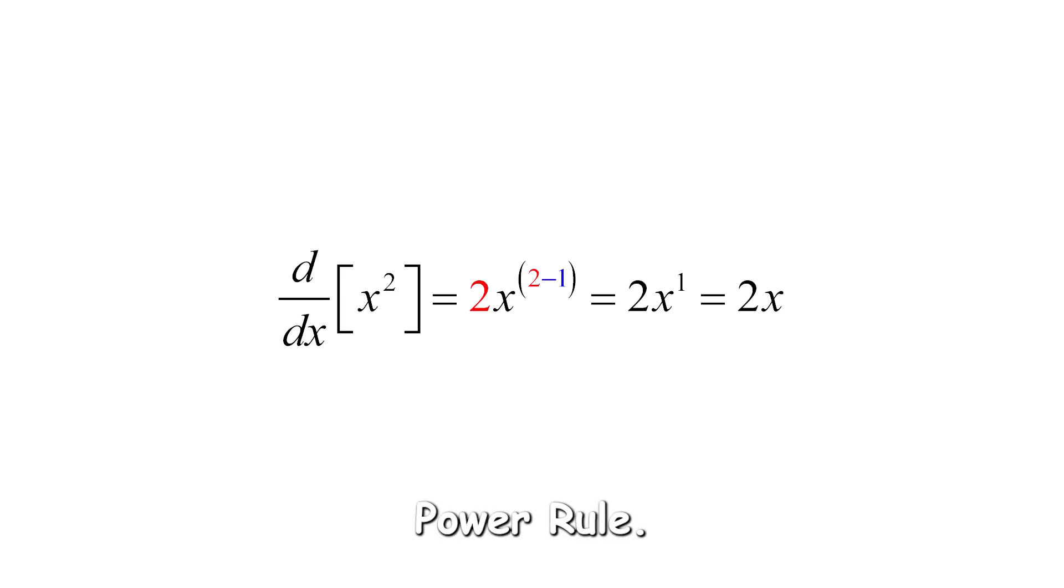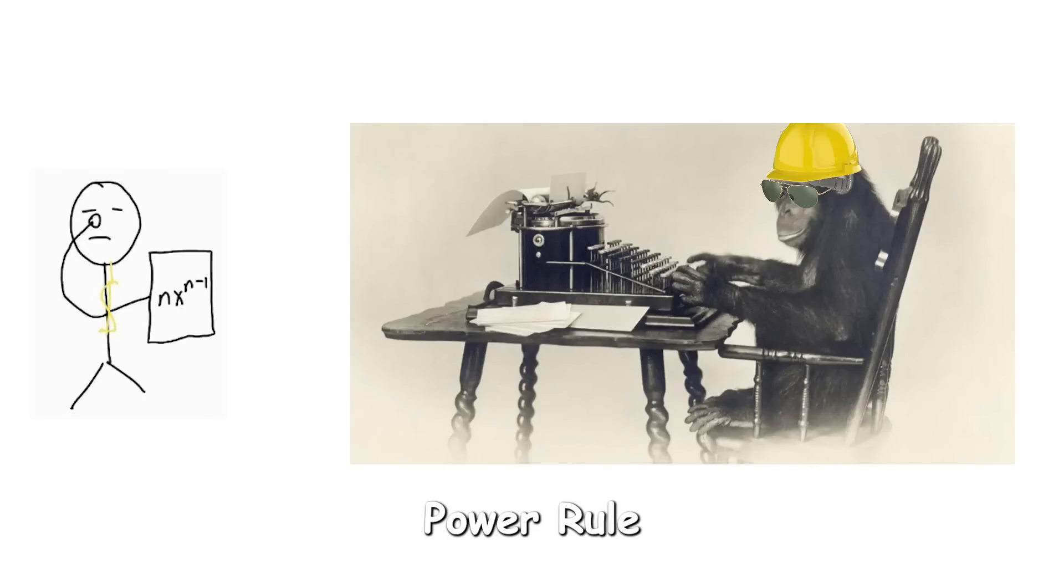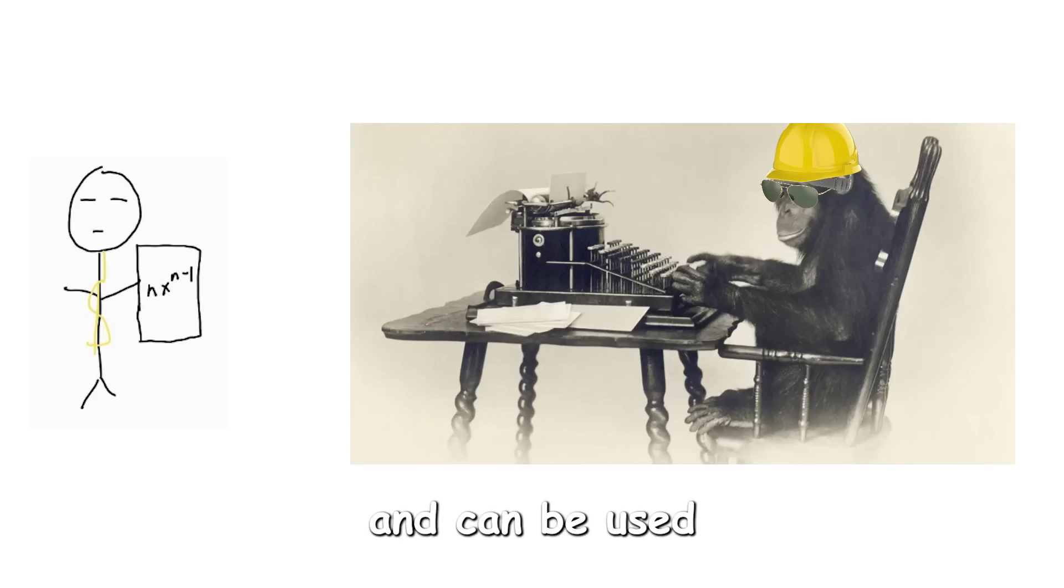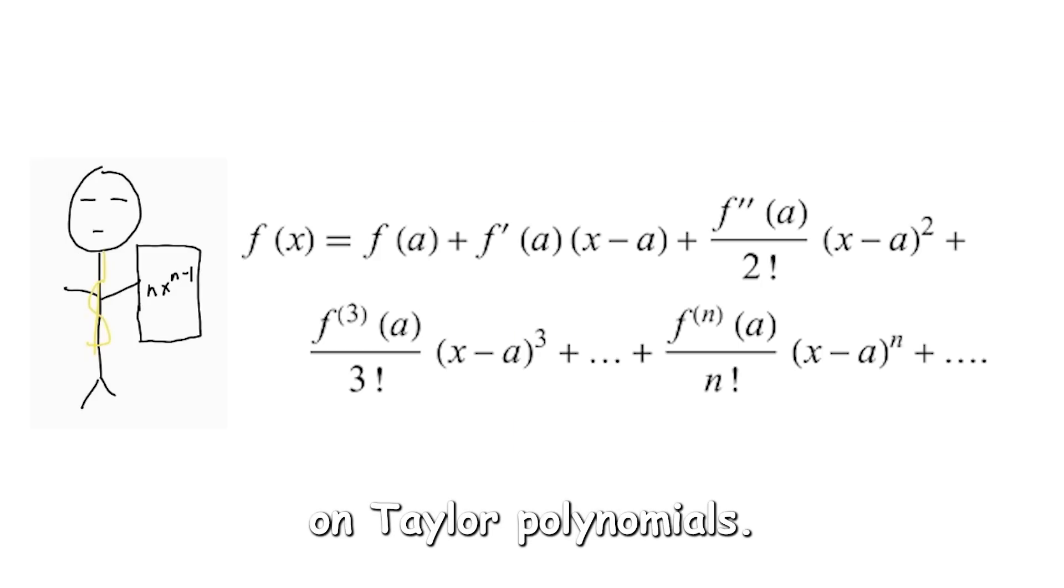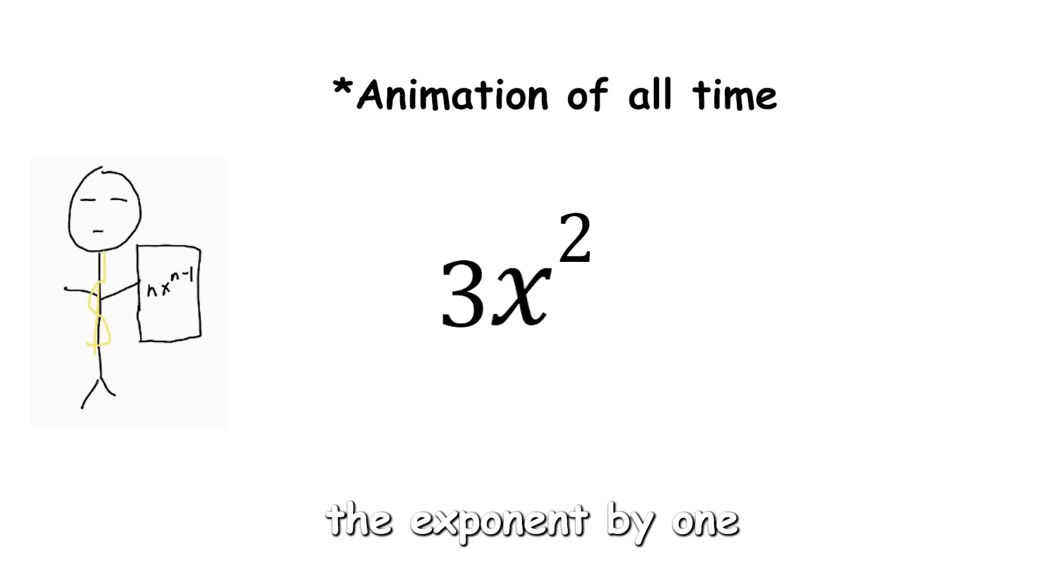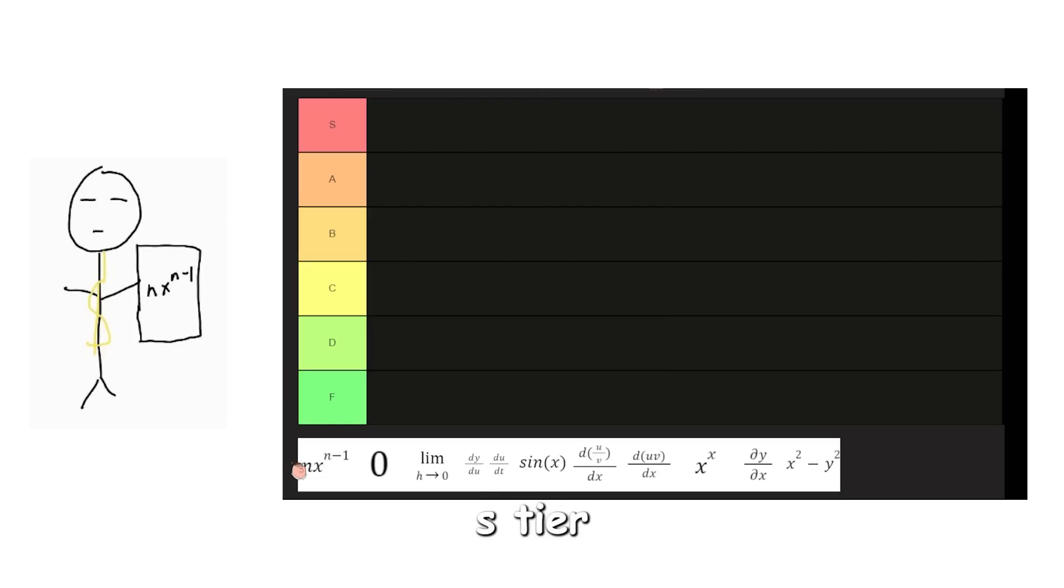Derivatives tier list. Power rule. Power rule is the first real method of differentiating after the first principles. It is easy and can be used on any polynomial, and it is especially useful on Taylor polynomials. Just bring the exponent down and lower the exponent by one. S tier.